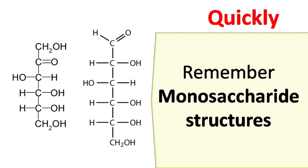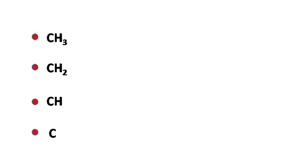Hey everyone, Quick Biochemistry Basics here. Let's memorize the structure of monosaccharides. Now for simplicity, the carbon atoms present in the chain are represented by a red dot, which can either be CH3, CH2, CH, or simply a carbon atom.